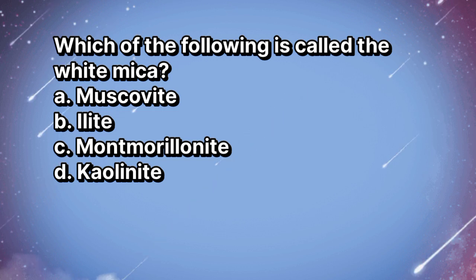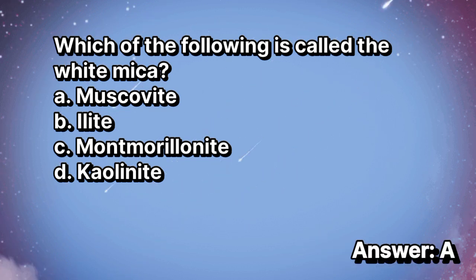Which of the following is called the white mica? A. Muscovite. B. Illite. C. Montmorillonite. D. Kaolinite. The answer is letter A.